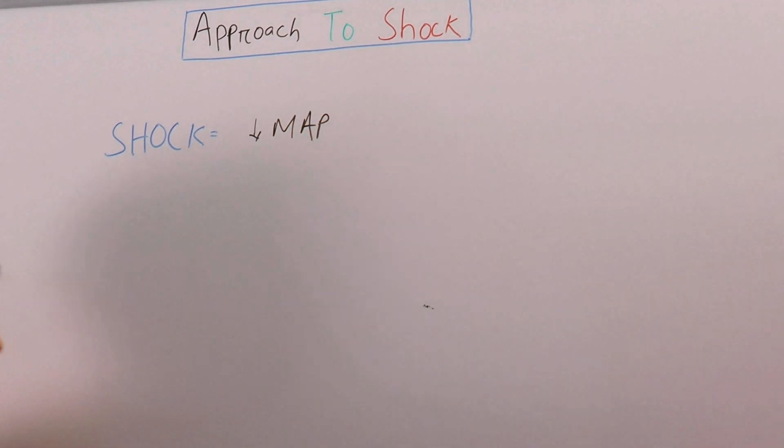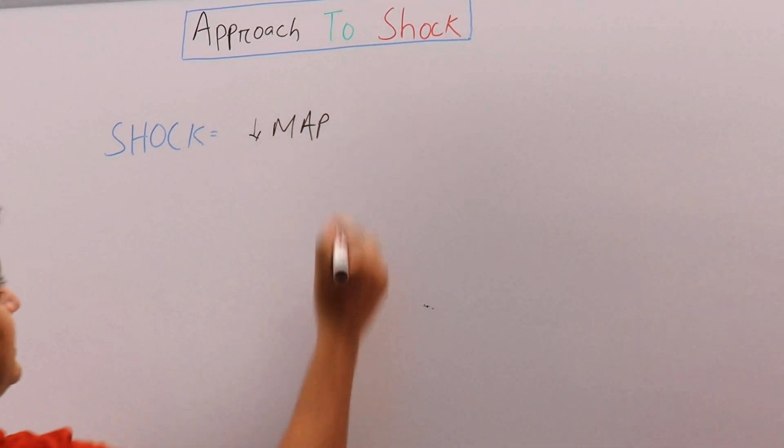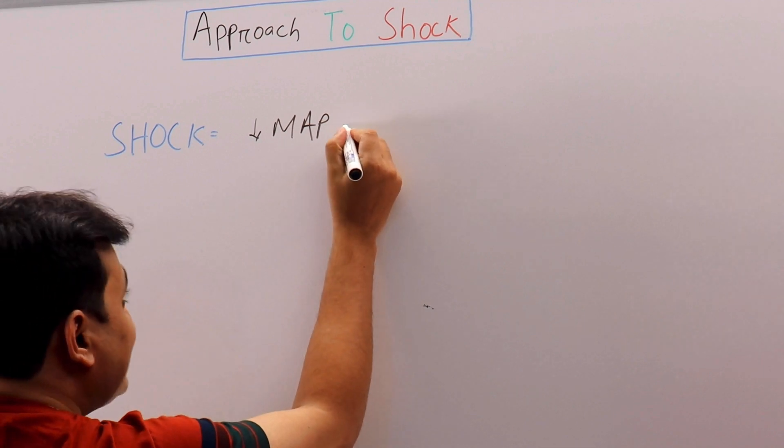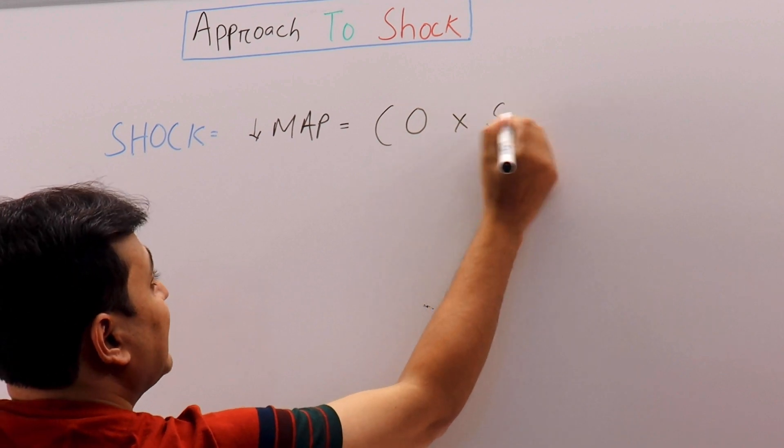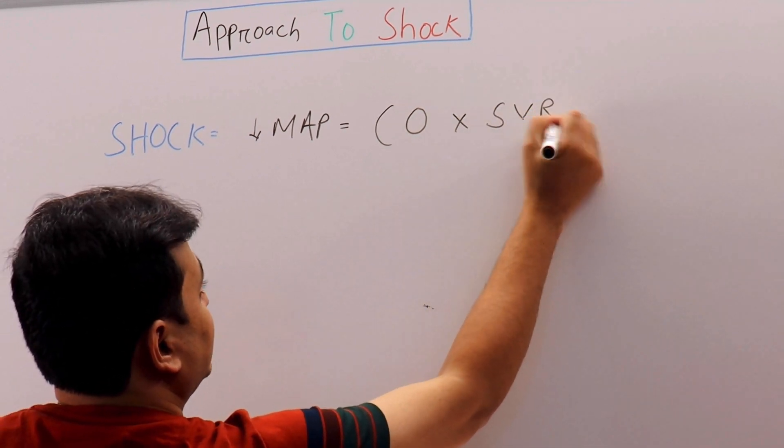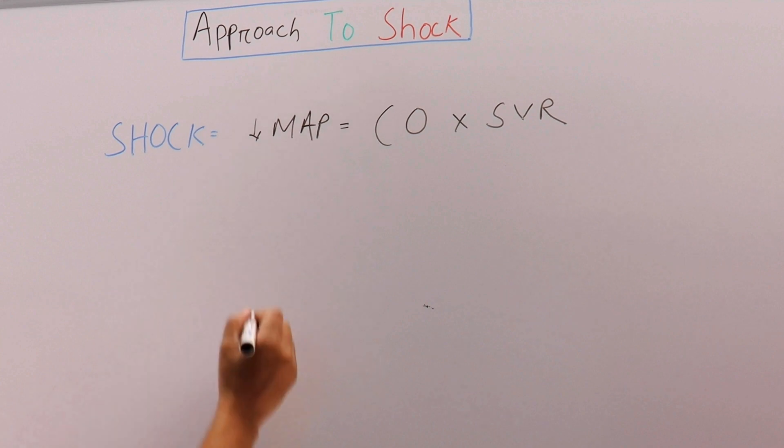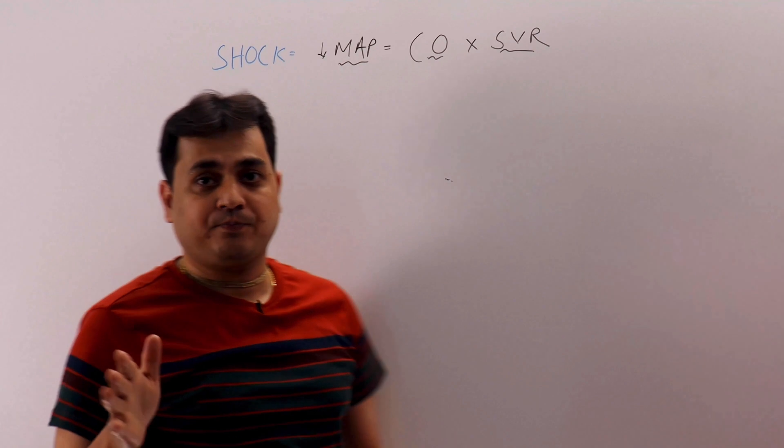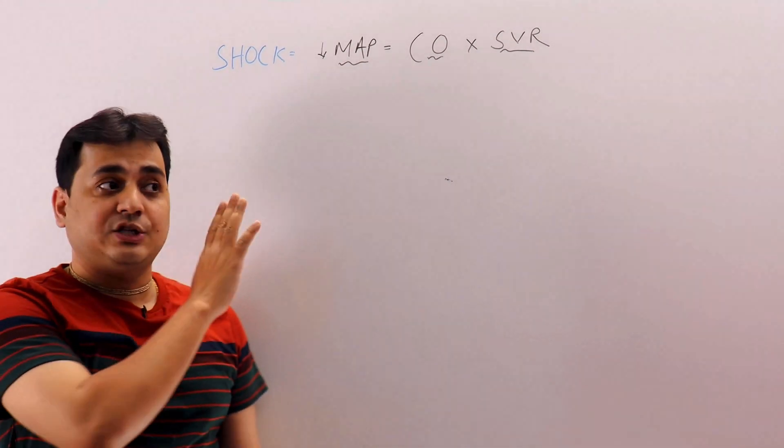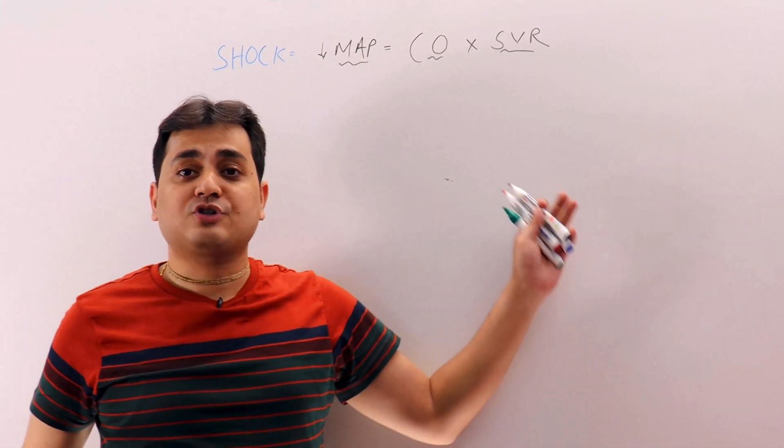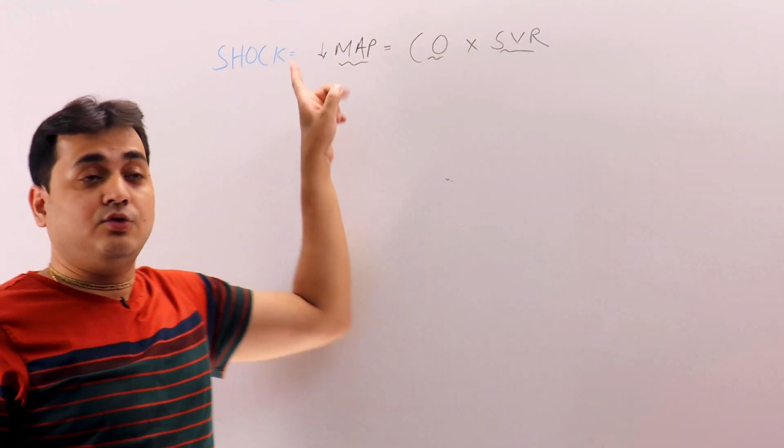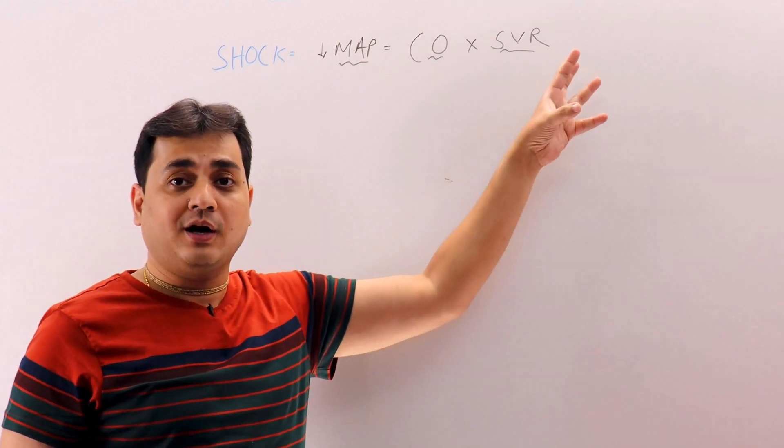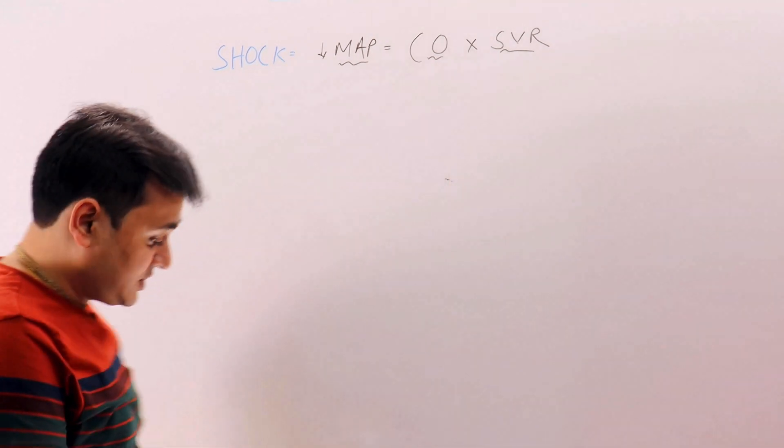So MAP is equal to cardiac output times systemic vascular resistance. This is the formula for mean arterial pressure. When mean arterial pressure is down, that means either the cardiac output can go down or the systemic vascular resistance can go down. By following this equation only, if you can reach a differential diagnosis of shock, that will be good for us.